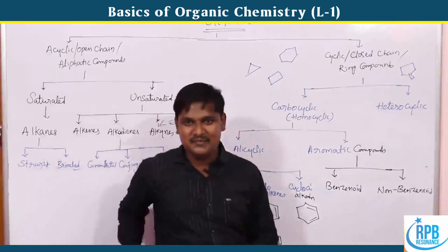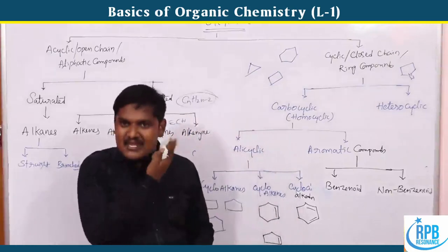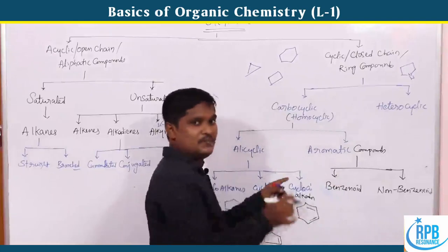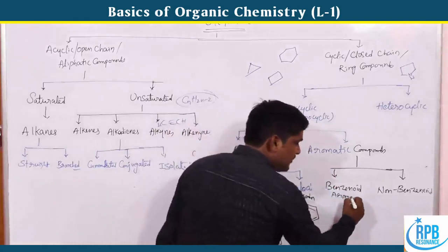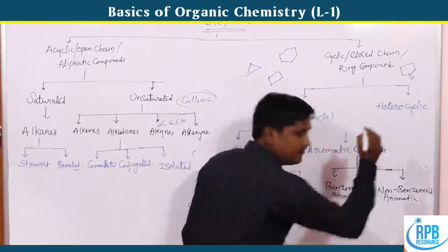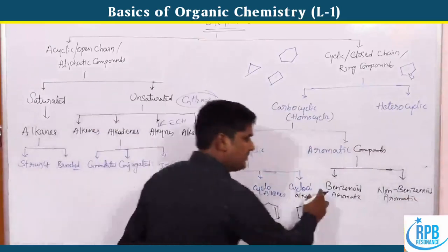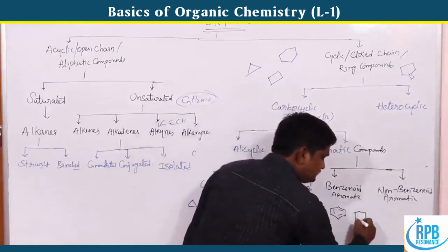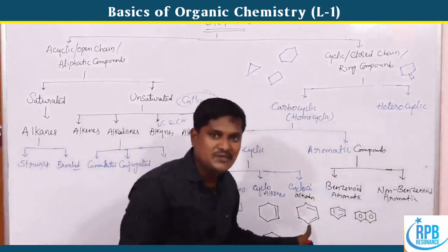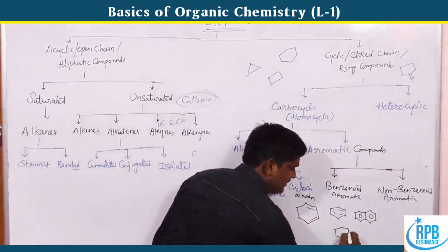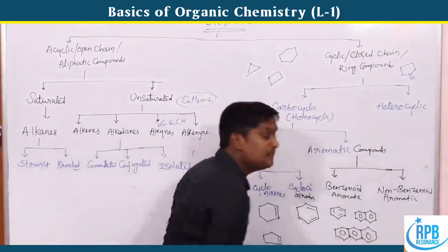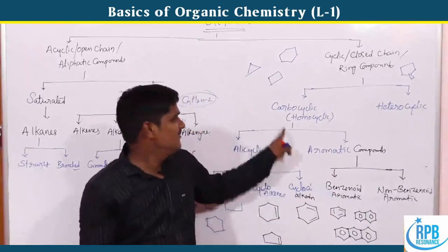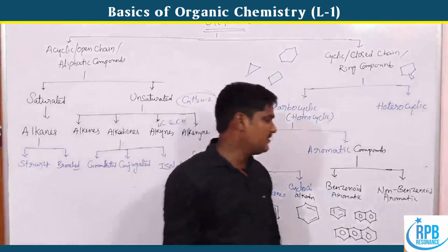Benzenoid aromatic compounds have a structure similar to benzene — a six-membered ring with three double bonds. Examples include benzene, naphthalene, and anthracene. These are all carbocyclic benzenoid aromatic compounds with no heteroatoms.